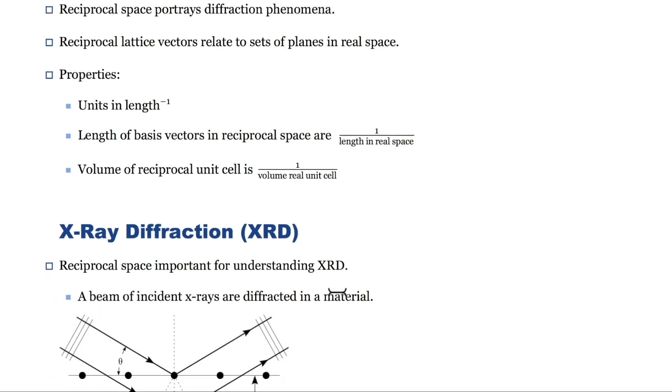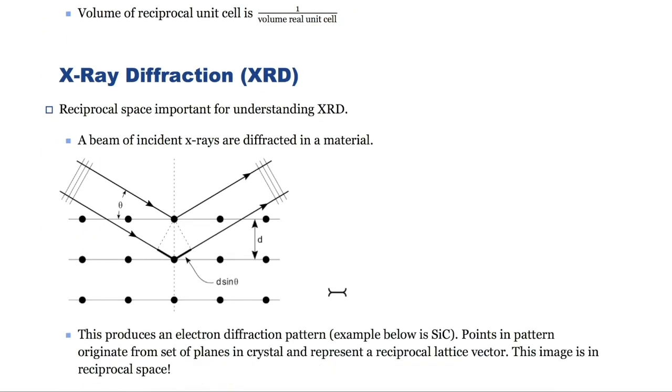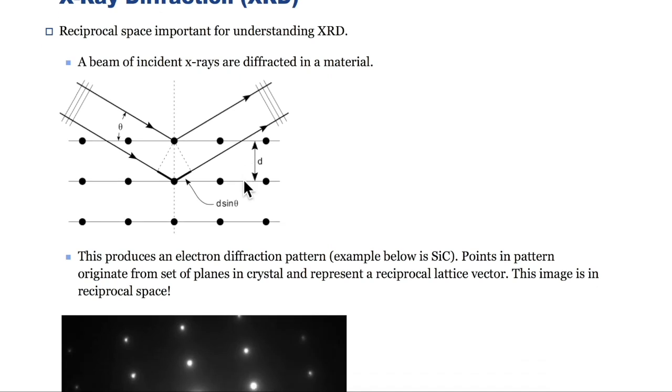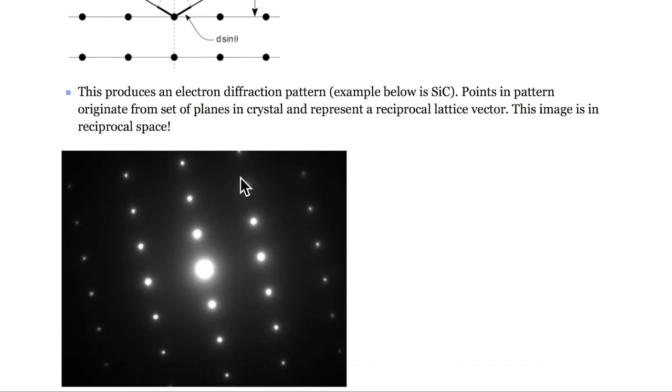Consequently, reciprocal space is a very important concept. For example, it is a key property in understanding X-ray diffraction. In X-ray diffraction, a beam of incident X-rays are diffracted in a material, and the diffraction angle is measured. This produces an electron diffraction pattern, seen here. Here, the electron diffraction pattern is of silicon carbide. Points in the pattern originate from a set of planes in the crystal, and each point represents a reciprocal lattice vector. Therefore, electron diffraction patterns exist in reciprocal space.